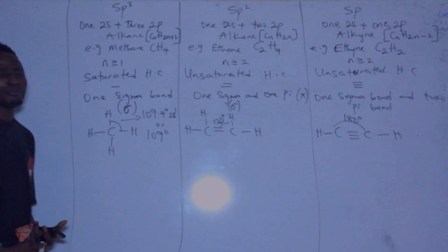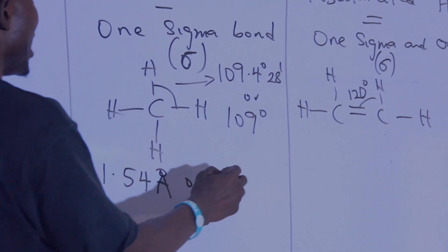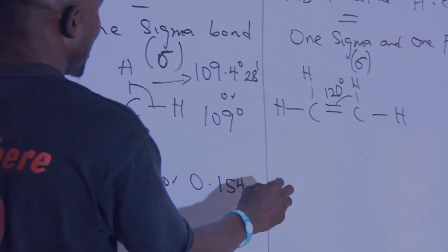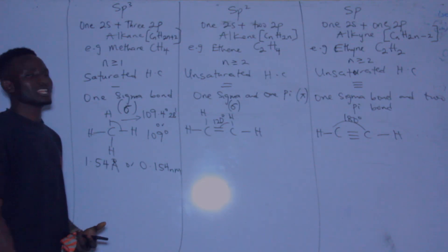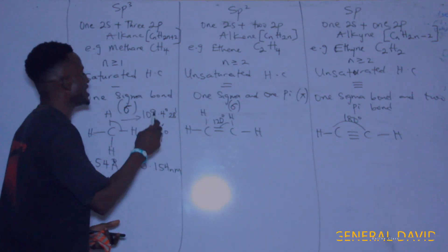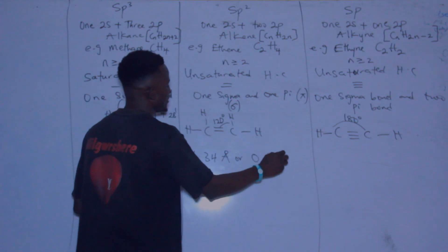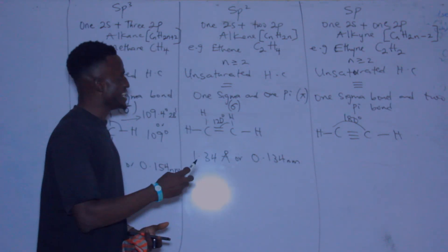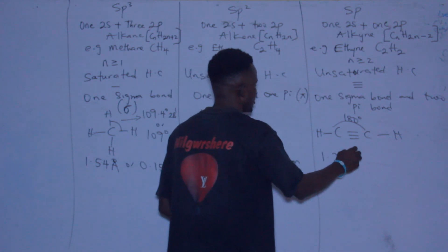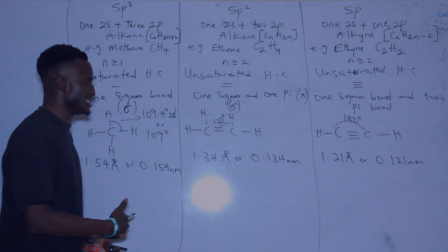We also have the bond length. The bond length of sp³ is 1.54 Ångströms, or 0.154 nanometers. The bond length of sp² hybridization is 1.34 Ångströms, or 0.134 nanometers. And the bond length for sp is 1.21 Ångströms, or 0.121 nanometers. You multiply by 0.1 to convert from Ångströms to nanometers.